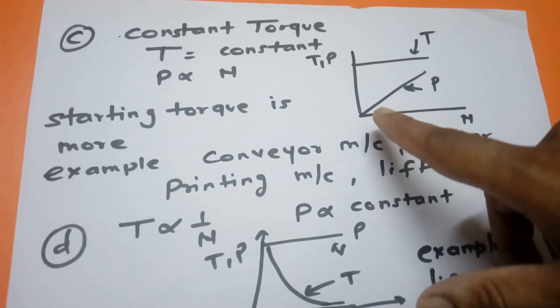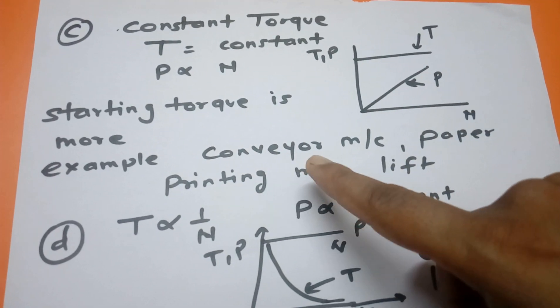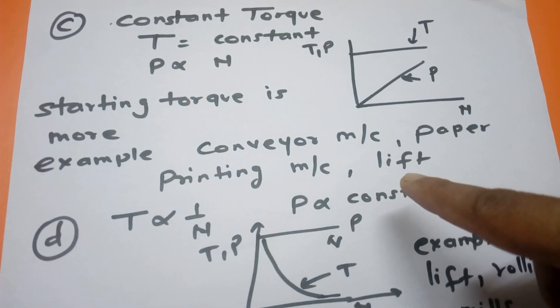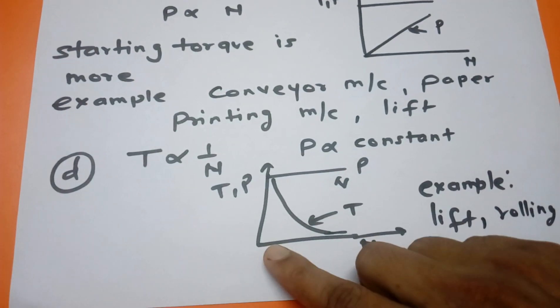Next category of torque is constant torque applications. The starting torque is very much high and is invariable according to speed. Such a load we are using in conveyor machines, paper printing machines, and lift.